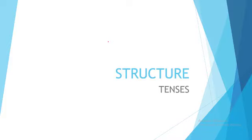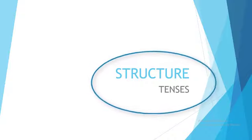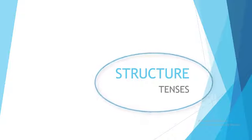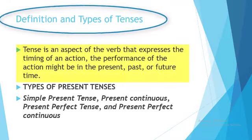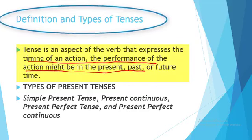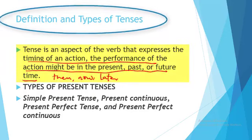Today our focus is on tenses. Tenses refer to the time an action was performed, which can be in the present, the past, or future time. So it could be then, it could be now, or it could be later. 'Then' refers to yesterday — past. 'Now' refers to present, and 'later' refers to future.